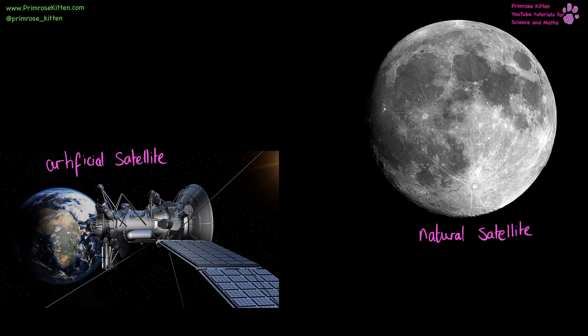An artificial satellite is something that we have put up into space to orbit the earth, whereas a natural satellite is something like the moon, which naturally orbits the earth. A satellite is just anything that orbits the earth. They maintain their orbit around the earth due to gravity.